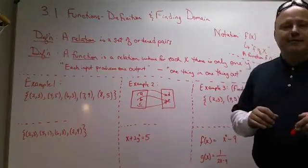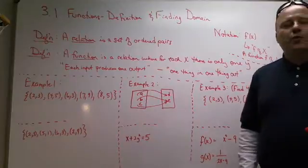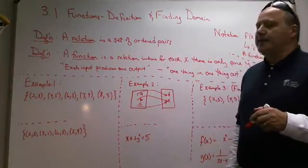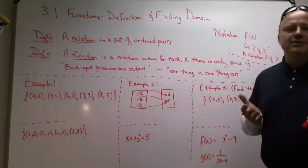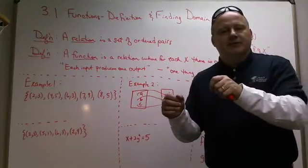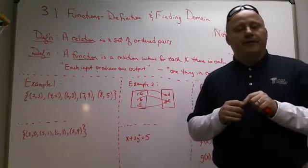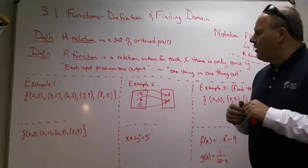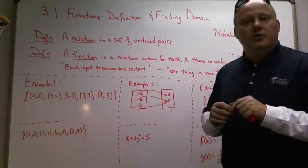Now, a function is one step further. A function is a relation where for each X there is only one Y. Another way to put that is for each X, it produces one output or one thing in, one thing out. So it's kind of like a machine. You put something into the machine and the machine does its thing and it produces an output. But it only produces one output for that number you put in. So example one is referring to whether this is a function or not.